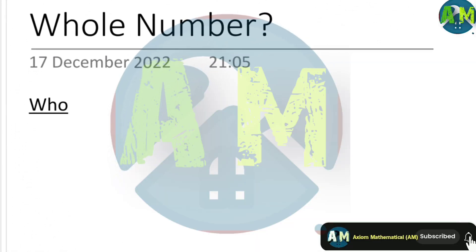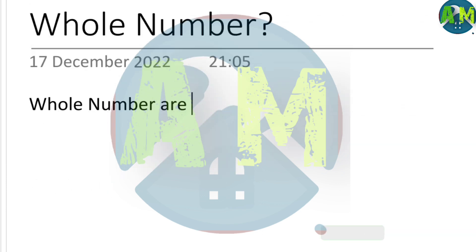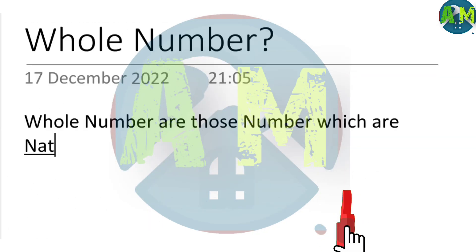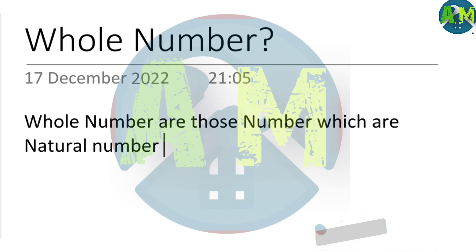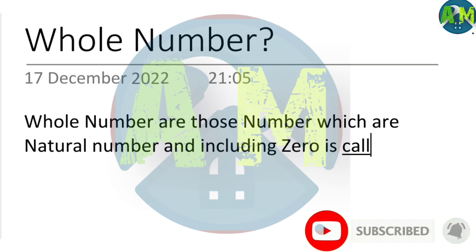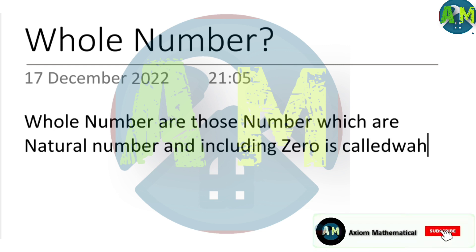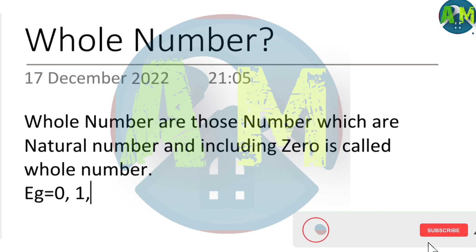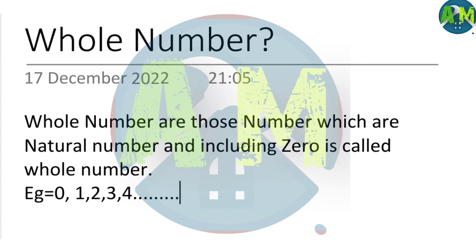Whole numbers. Whole numbers are those numbers which are natural numbers and also include zero. It's called whole numbers. Examples are: 0, 1, 2, 3, 4, and so on.